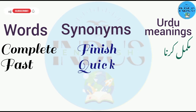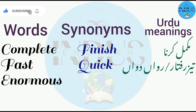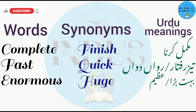Fast — synonym is quick. Urdu meaning is tez raphtar ya rwaan. Enormous — synonym is huge. Urdu meaning is bohat bada ya azim.